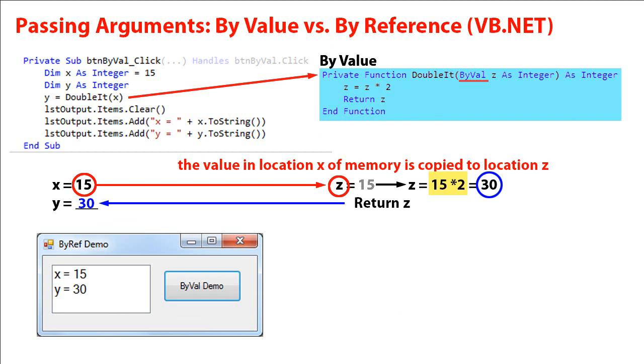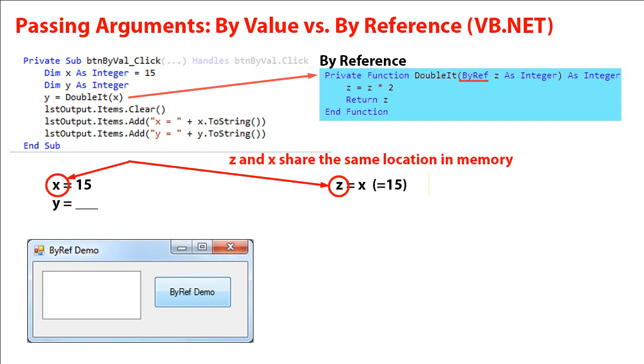Let's look at what happens when we pass it by reference. The only thing I've changed here is the keyword in the parameter declaration of my function. I changed it from byval to byref. I'm going to pass x to the function, but now I'm passing it by reference.